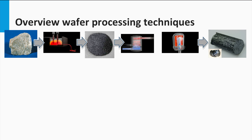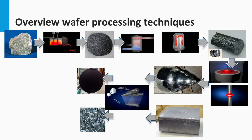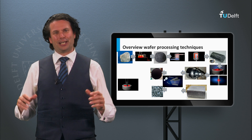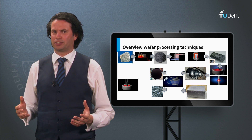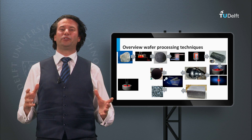To summarize: we have discussed how out of quartzite we first make metallurgical silicon and then polysilicon. Monocrystalline ingots are made using either the Czochralski or the float zone process. Multicrystalline ingots are made using a casting method. Wafers are made by sawing these ingots, and a method without any kerf losses is the so-called ribbon silicon approach. Now we know how to make wafers — next we will discuss the design rules for making solar cells in the next block.